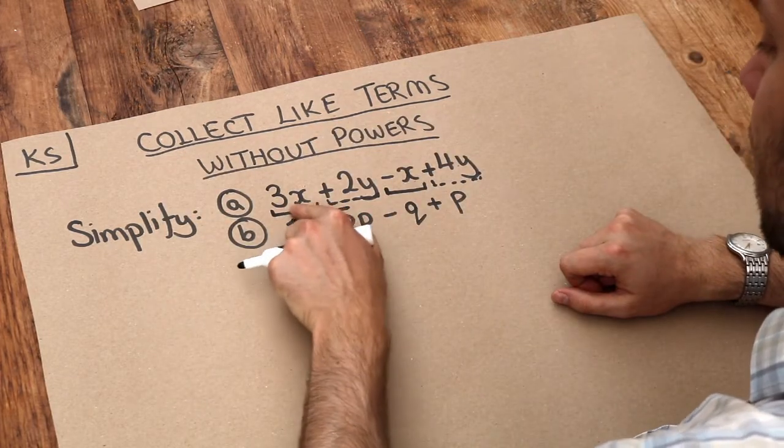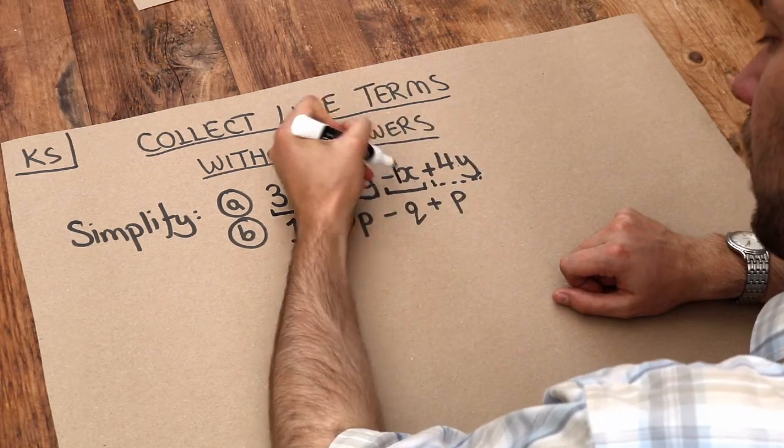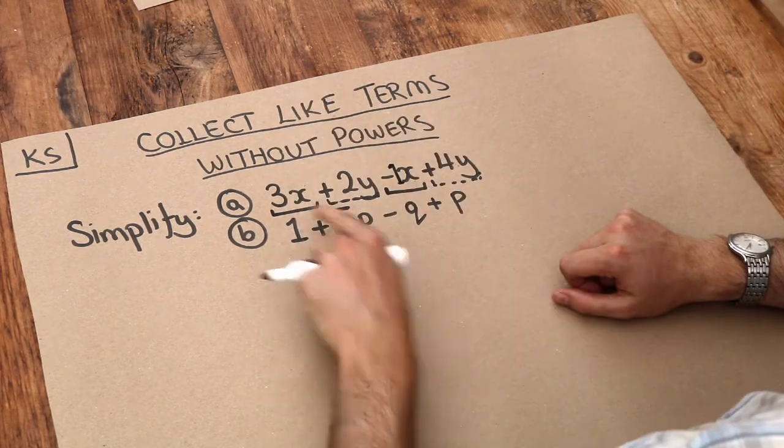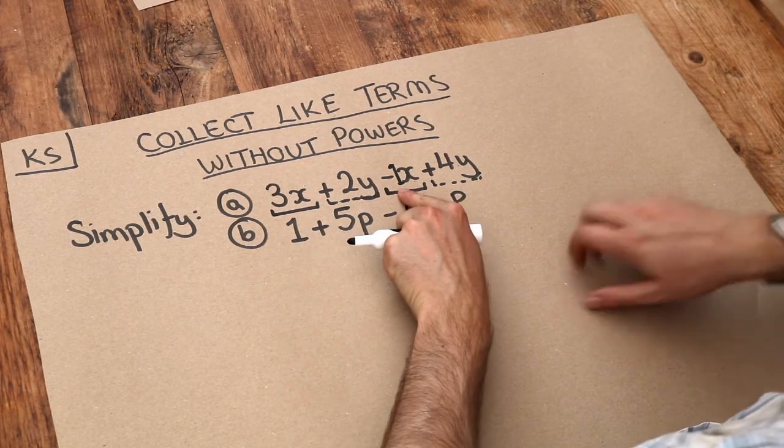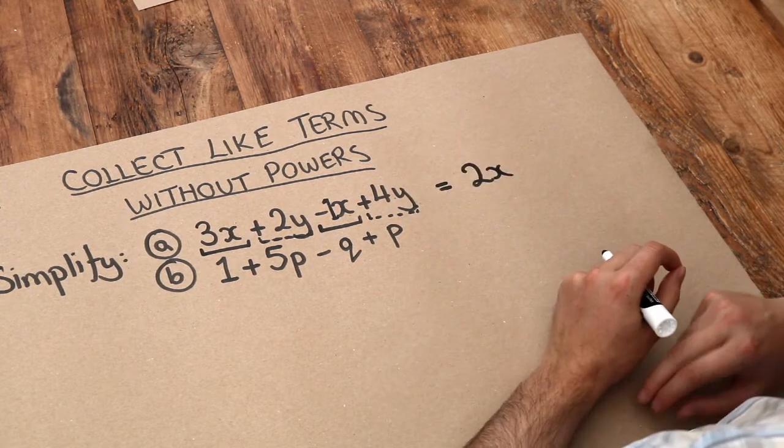If we've got three lots of x and we subtract one lot of x, there's no number in the front so we could think of this as just one lot of it. So three lots of x minus one lot of x gives us two lots of x, which we'd write as 2x.